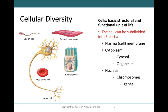Cells are referred to as the basic unit of life — the basic structural unit. This is as small as something can get and still be considered alive. We use the basic life processes from Chapter 1 to determine whether cells are alive. Each type of cell is different from other cell types, and each has unique organelles that give it its unique function.